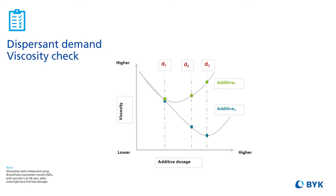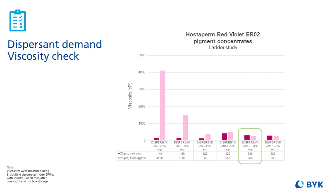Looking at our lab results: if we take two additives at three dosage levels — low, medium, and high, shown as points D1, D2, and D3 on the graph — and plot their initial viscosities, we see that both dispersants follow a U-shaped curve. As the dosage level increases, the best dispersant will have the lowest viscosity at the smallest possible level. In this case, Additive 2 at point D2 is the best choice for the system. We repeated this ladder study with Disperbyk-2013 at three different loading levels and found that for the system containing Hostaperm Violet pigment, the optimum level was approximately 30 percent solids on pigment. This level gave the desired storage stability, and any further increase of dispersant is not required and will not be beneficial.